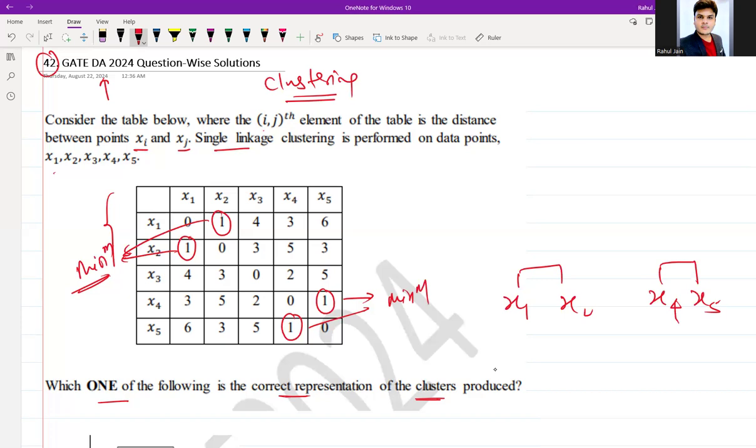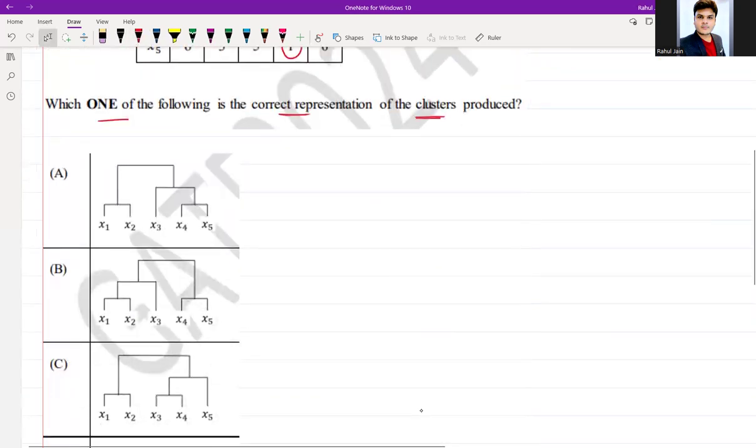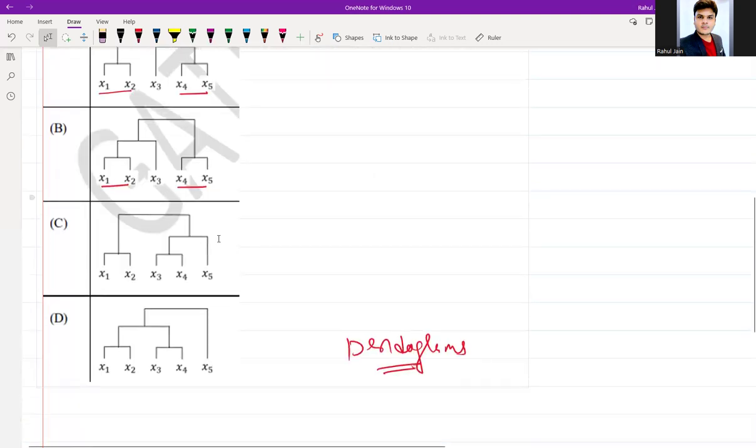You can see here x1 and x2 are okay here, x4 and x5 they are also merging, no need to worry. Here x1 and x2 is okay but x4 and x5 is also okay, no worry till now. Here if you see x1, x2 okay, but they are merging x3 and x4 first which is not correct.